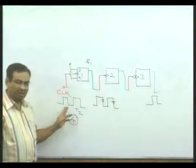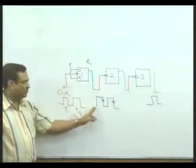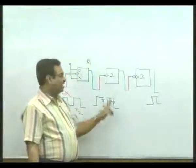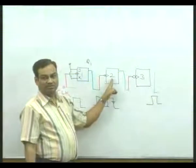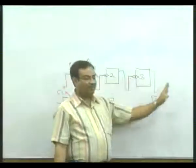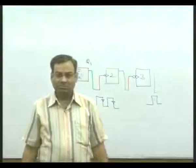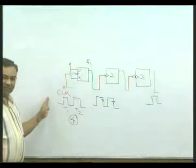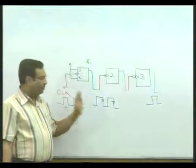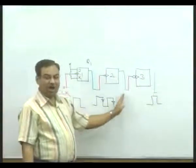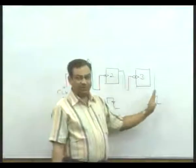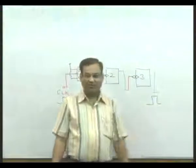If you submit four clocks at the input, the output of the first flip-flop will be two clocks only. When these two clocks are fed as input to the second flip-flop, the output is only one clock. The output of the third flip-flop will be practically nil. If you submit eight clocks to the input, output of the first flip-flop will be four clocks; four clocks fed to the second gives two; two clocks fed to the third gives one clock.